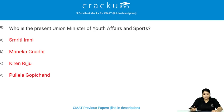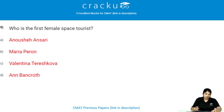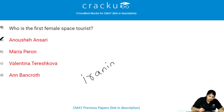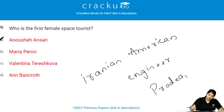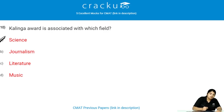Who is the present Union Minister of Youth Affairs and Sports? Kiren Rijiju is the present Union Minister of Youth Affairs and Sports. Who is the first female space tourist? The first female space tourist is Anousheh Ansari. She is an Iranian-American engineer and co-founder of Prodea Systems.